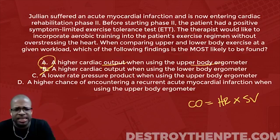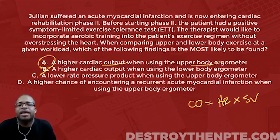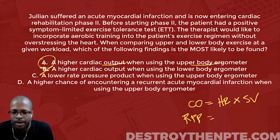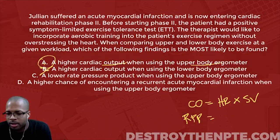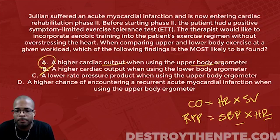Answer C says a lower rate pressure product when using the upper body ergometer. Not only do you have to know cardiac output, now you have to know what the rate pressure product — RPP — is and what makes it up. Rate pressure product equals systolic blood pressure times heart rate.